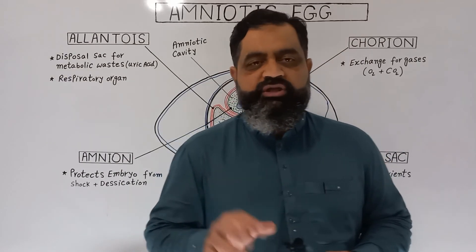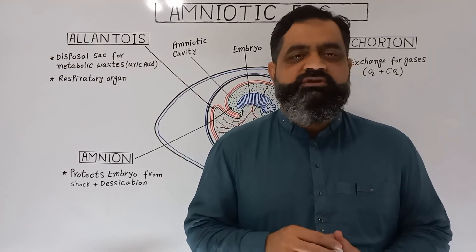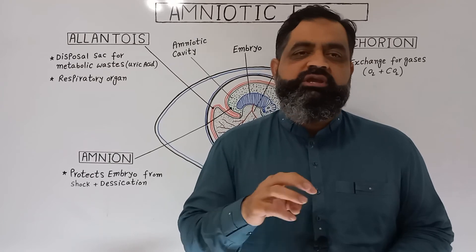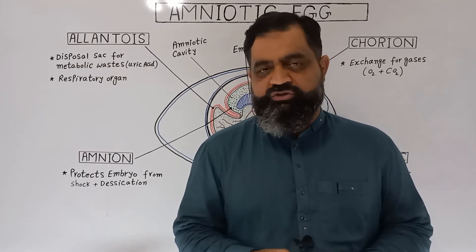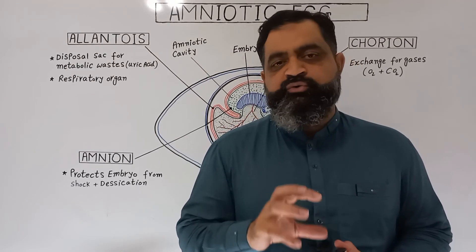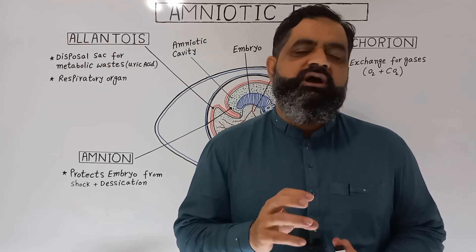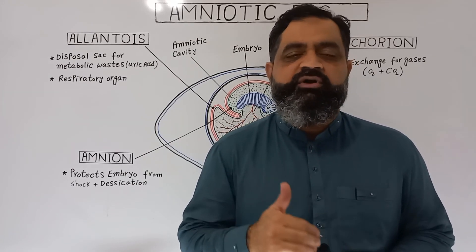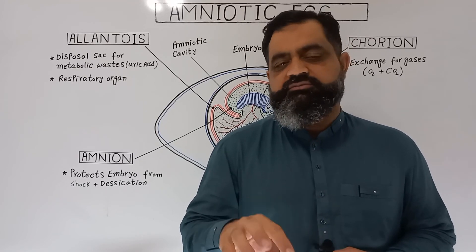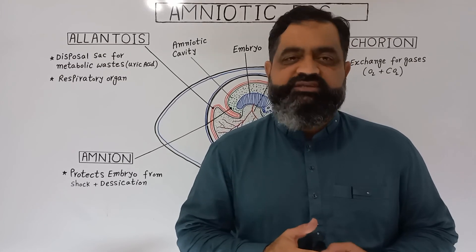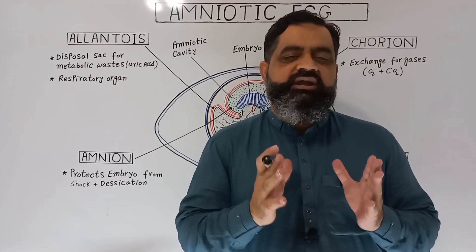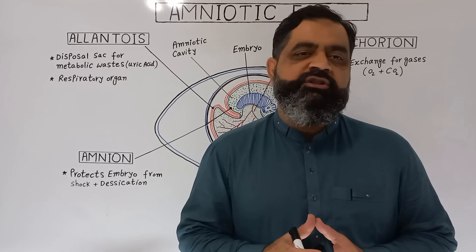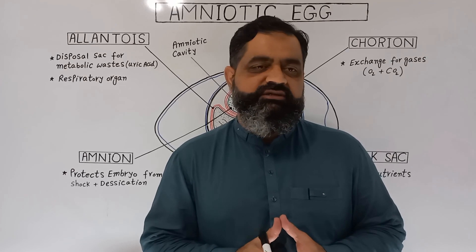As mentioned, three groups — reptiles, birds, and the first group of mammals (Prototheria) — lay or retain amniotic eggs and are known as amniotes. The remaining mammals — marsupials (Metatheria) and true mammals (Eutheria) — also produce eggs, but they are very small, not enclosed by shells, and embryo development takes place within the mother's body in a structure known as the placenta. Internal fertilization occurs in all three amniote groups, while fishes and amphibians perform external fertilization.